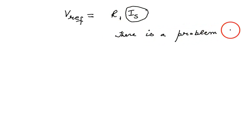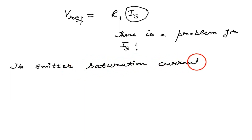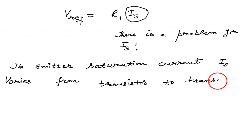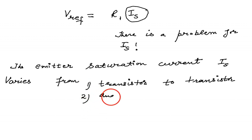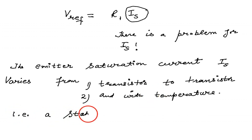IS is the reverse saturation current and it creates a problem. IS is not a constant quantity — it varies from transistor to transistor. It also varies with temperature. If IS becomes a function of temperature, then V-reference, which is R1 times IS, cannot be considered constant, and the logarithmic amplifier will not give an accurate result in that case. So we need a stable reference voltage.